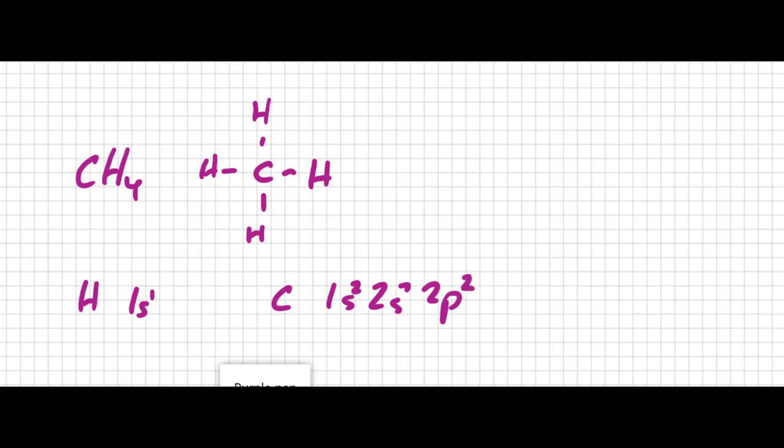Wait a minute. That would mean carbon has a filled inner shell, 1s2. Then it would have a filled 2s, and then it would have two electrons in the 2p. So carbon should only have two bonding electrons. How does it make four bonds? And if the p's are the bonding electrons, we know that the p orbitals are all perpendicular to each other, px, py, and pz. So all the p orbitals are at 90 degrees to each other. How do you get a 109.5 degree bond angle if the p orbitals are perpendicular?